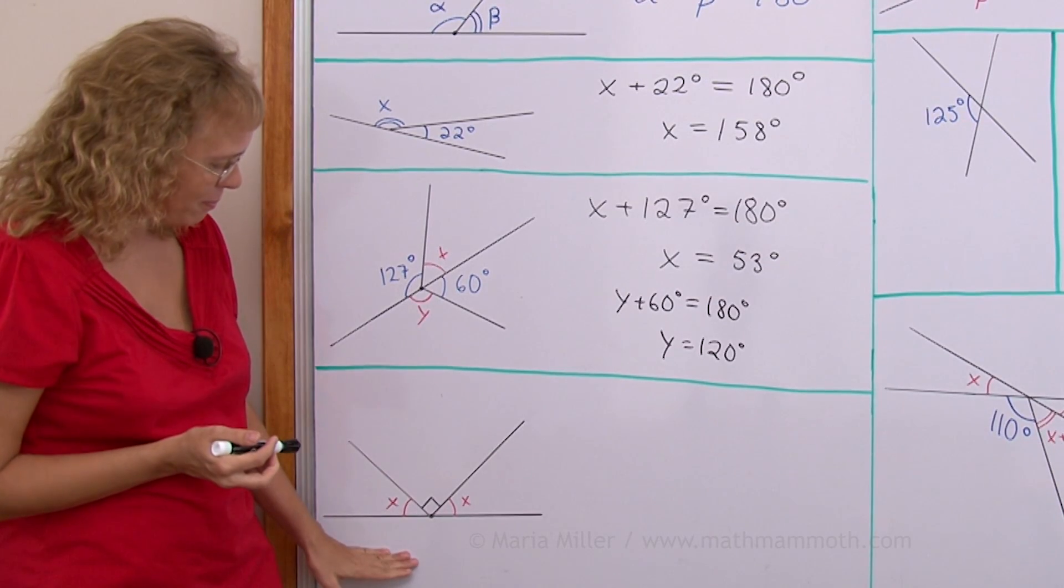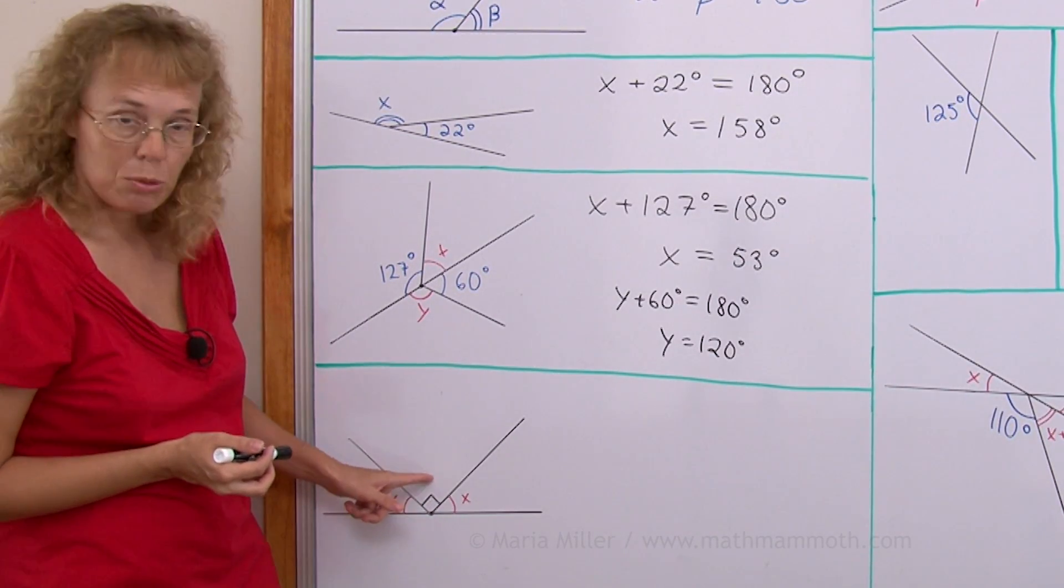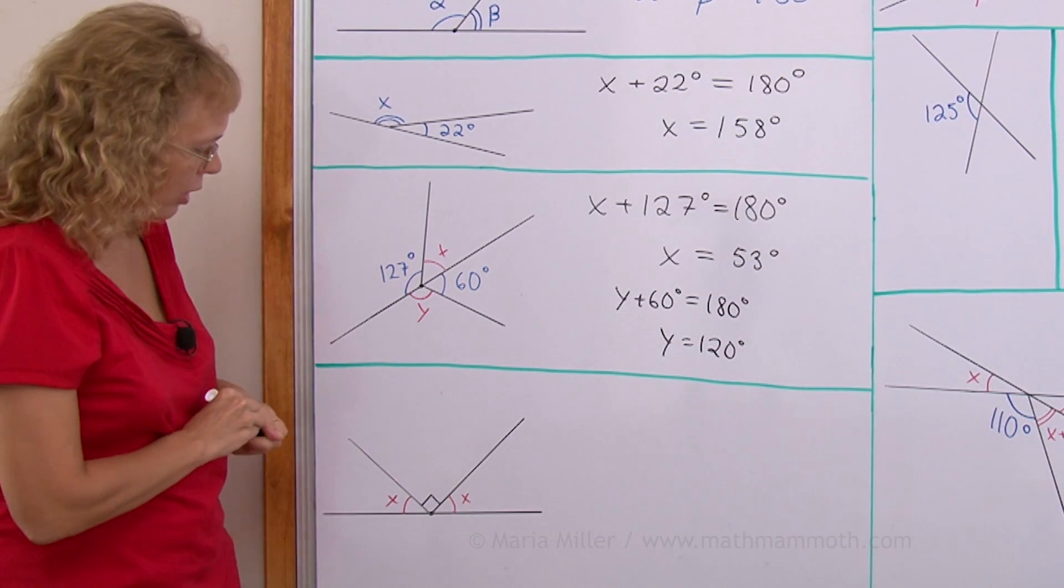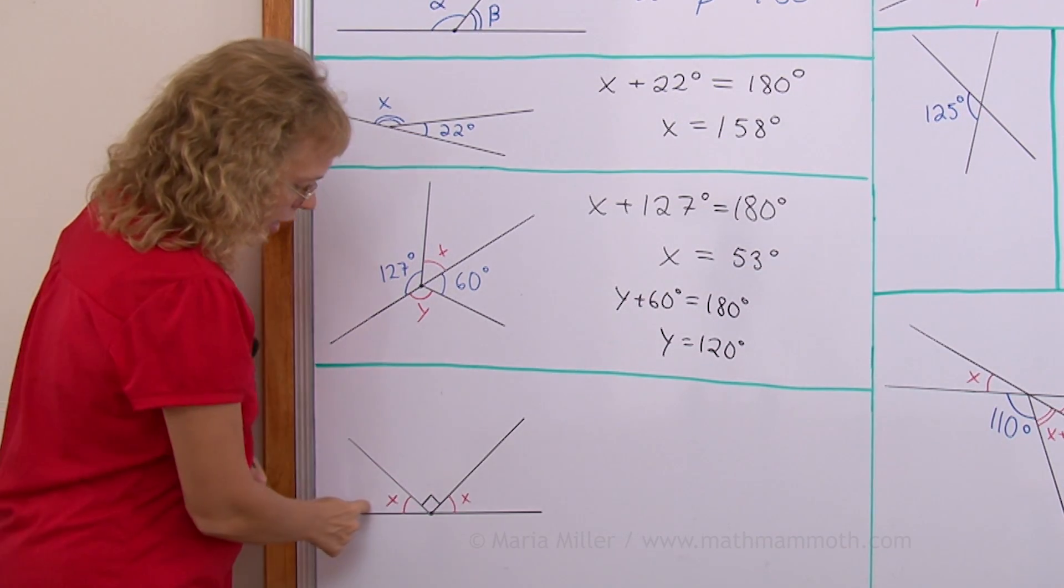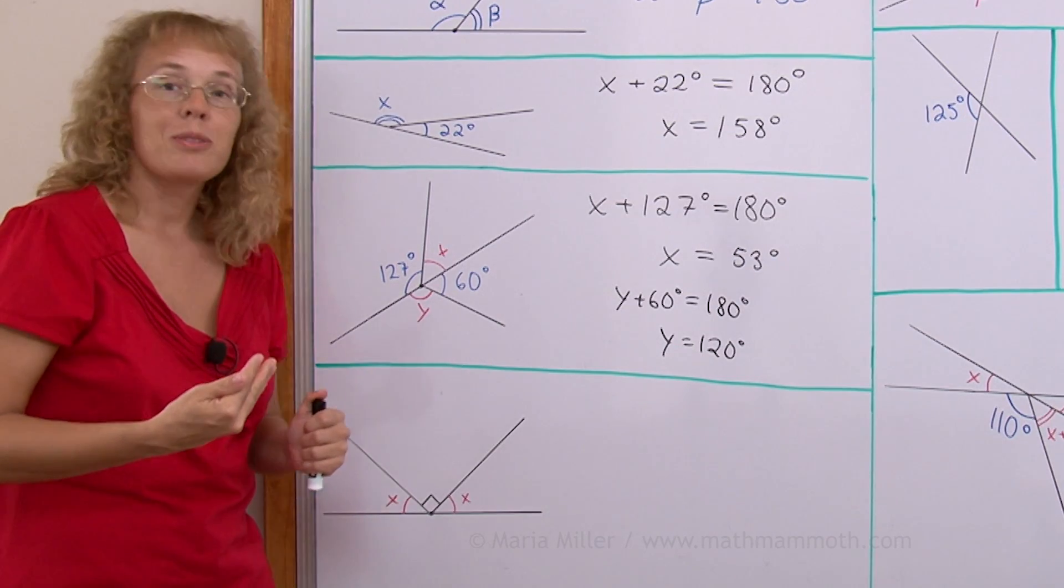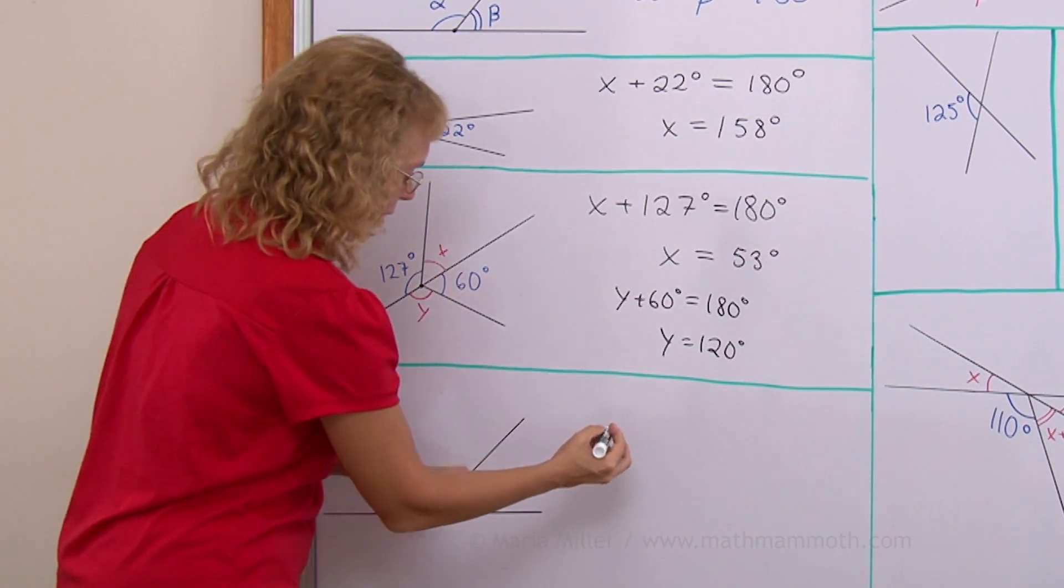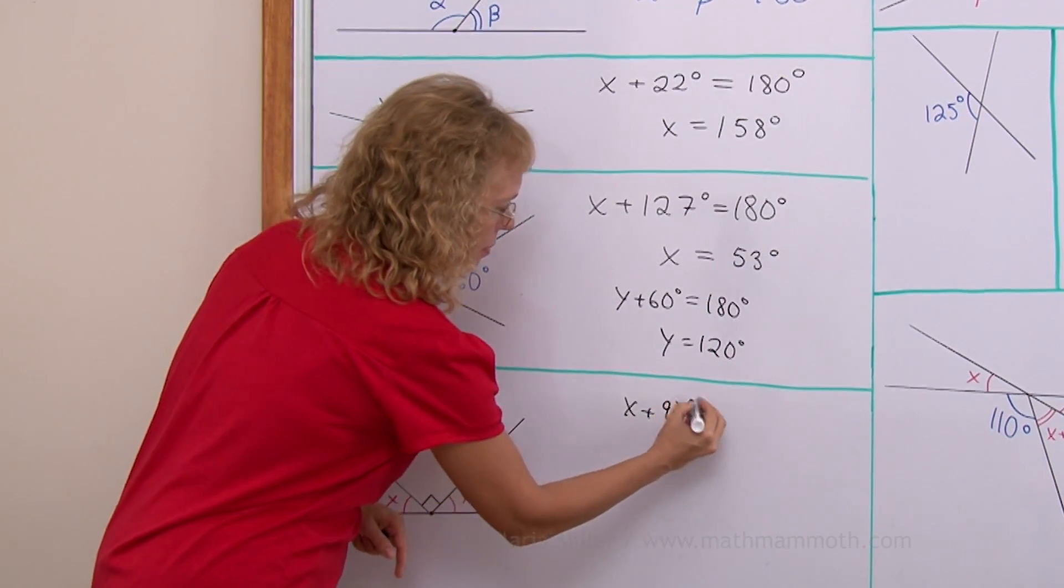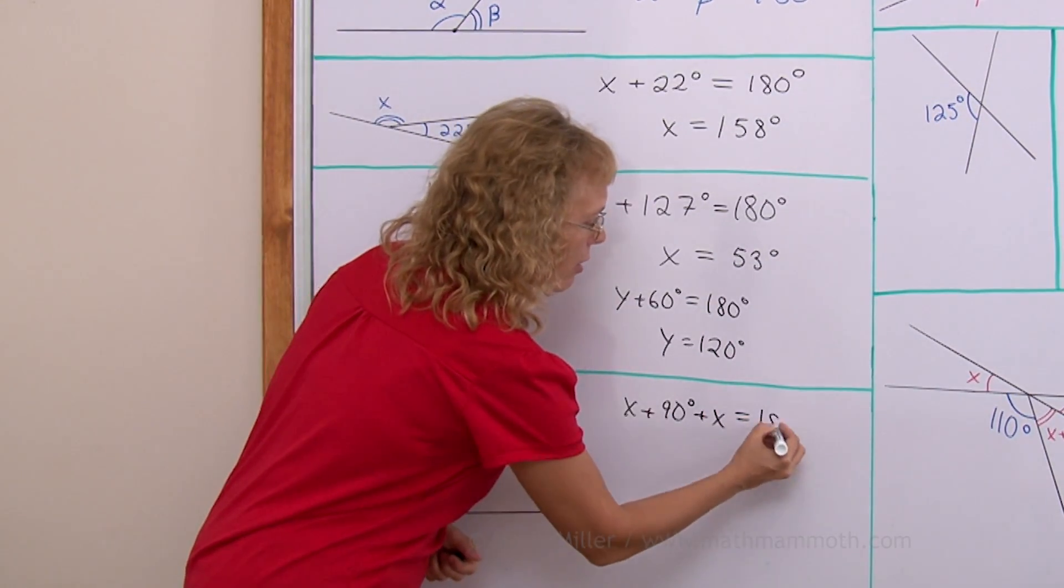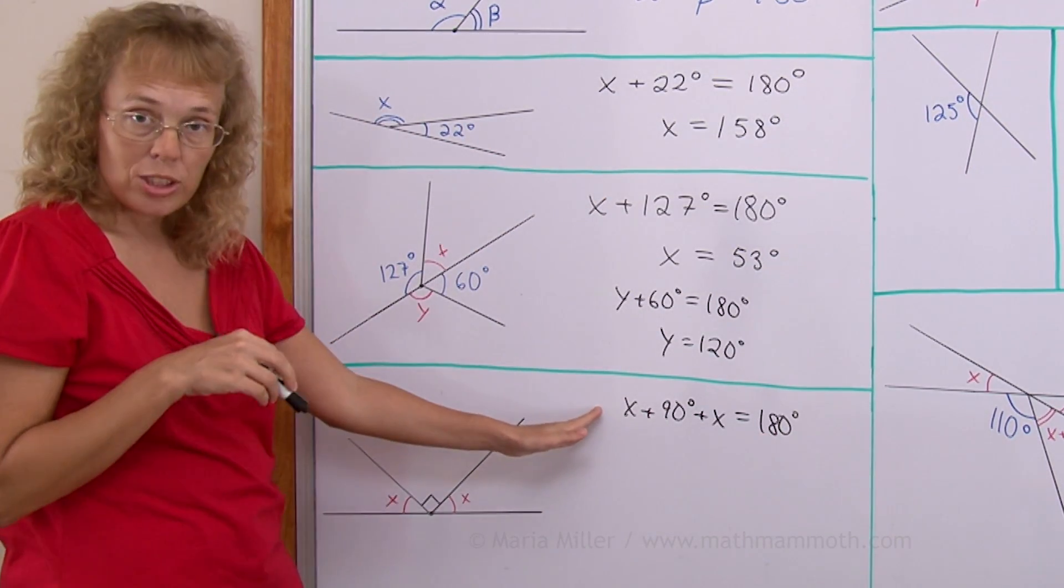Now over here this angle is a right angle. It's marked with this square here. Then we have X and X. So let me write an equation. All three angles together now add up to 180 degrees, right? So I would have X plus 90 plus X, because right angle is 90 degrees and then that is 180 degrees.